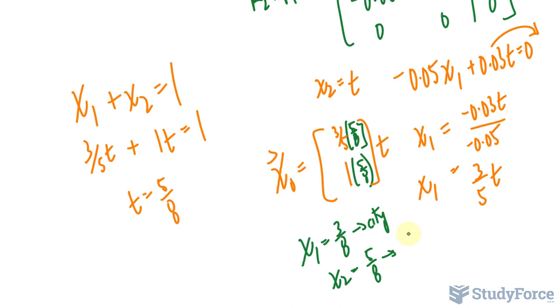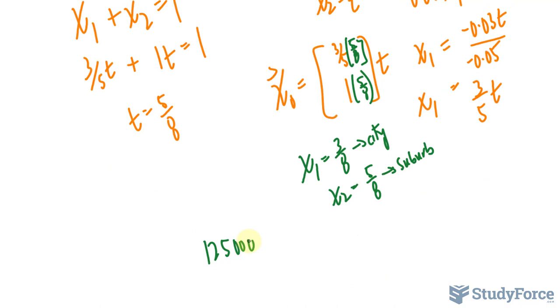If x sub-1 represents the city, and this represents the suburb, all we have to do now is take 125,000, multiply it by 3 over 8. This will tell us what the city population will be over time, and this will tell us the suburb population over a period of time.